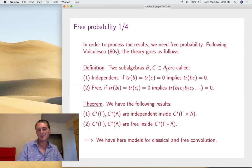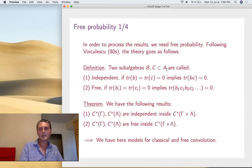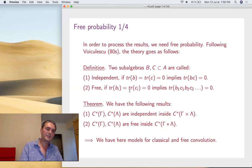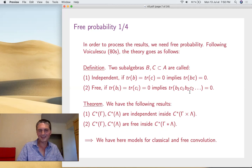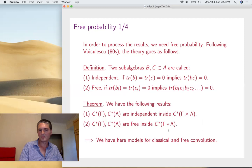Let A be a C*- or von Neumann algebra, or even a star-algebra with a trace — what matters is the trace. Two sub-algebras are independent if the trace factorizes: that's basically a tensor product situation. Now they are free according to Voiculescu if something similar holds, but instead of b times c you have an alternating product b₁c₁b₂c₂ of elements with zero trace. These things no longer commute — that's freeness. As a main example, if you take group algebras, they are independent in the tensor product and free in the free product.